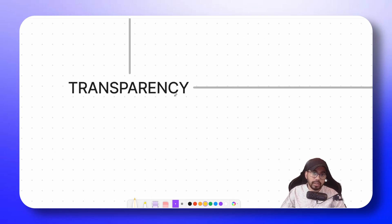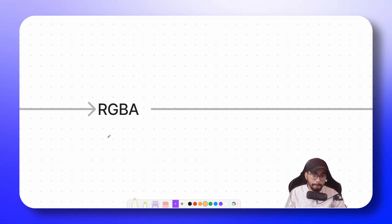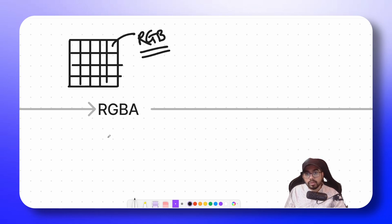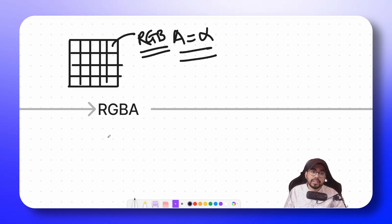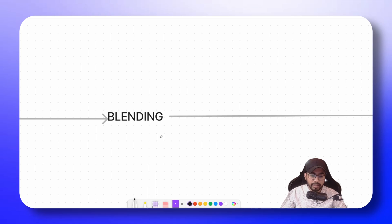In case of transparency, we first have to understand what RGBA is. If you have any image, it's basically made up of pixels, and each pixel is a RGB value. There is also a fourth value which is A, or alpha. This value decides the transparency — the opacity value of this pixel. If the alpha value is 0, it's completely transparent. If the alpha value is 1, it's opaque. Basically, alpha is the opacity value that we define.